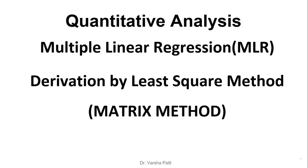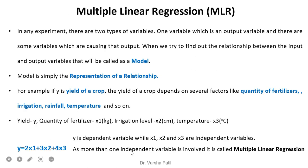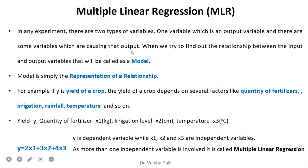Welcome to this video on multiple linear regression and its derivation by matrix method. In any experiment there are two types of variables: an output variable and variables which cause that output. When we try to find out the relationship between the input and output variables, that will be called a model. A model is simply the representation of a relationship.